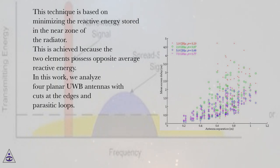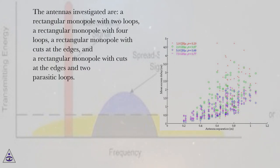In this work, we analyze four planar UWB antennas with cuts at the edges and parasitic loops. The antennas investigated are: a rectangular monopole with two loops, a rectangular monopole with four loops, a rectangular monopole with cuts at the edges, and a rectangular monopole with cuts at the edges and two parasitic loops.